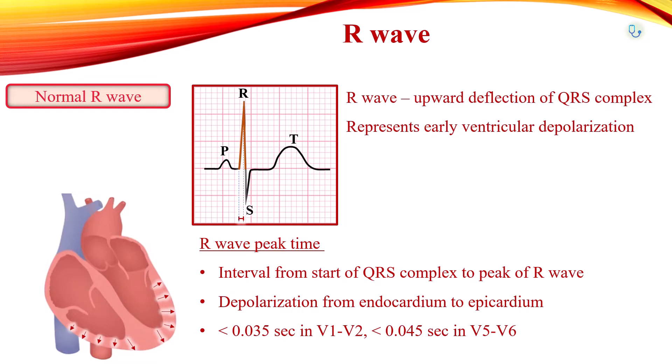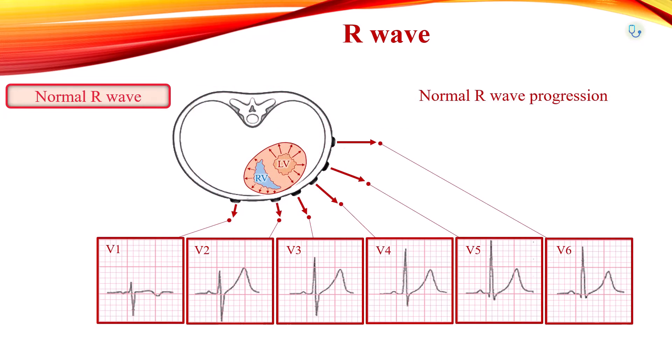Normally, in precordial leads, the amplitude of the R-wave gradually increases from V1 to V5 or V6, while the S-wave becomes less prominent. This phenomenon is called R-wave progression.